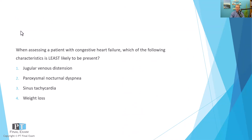I will read to you the question, give you a moment to respond, and then we'll talk about the answer together. When assessing a patient with congestive heart failure, which of the following characteristics is least likely to be present? One, jugular venous distension. Two, paroxysmal nocturnal dyspnea. Three, sinus tachycardia. And four, weight loss.